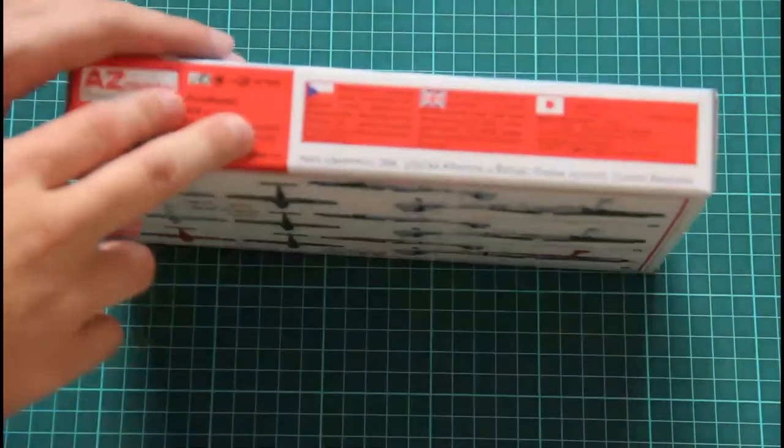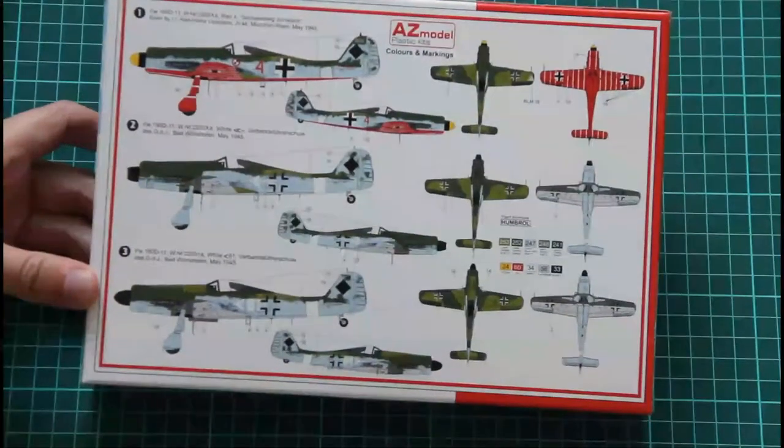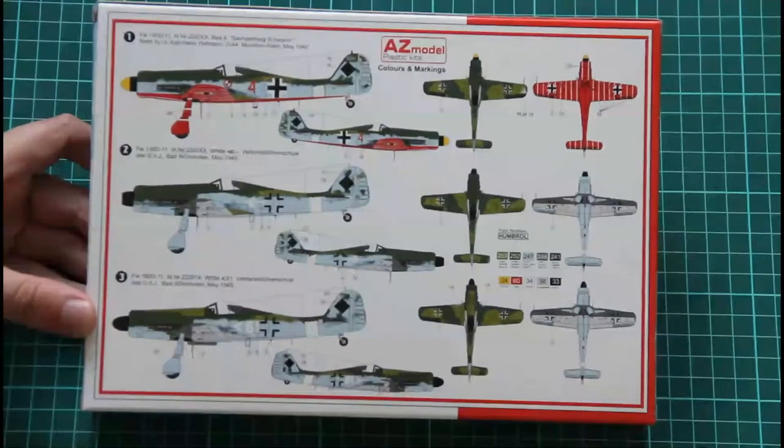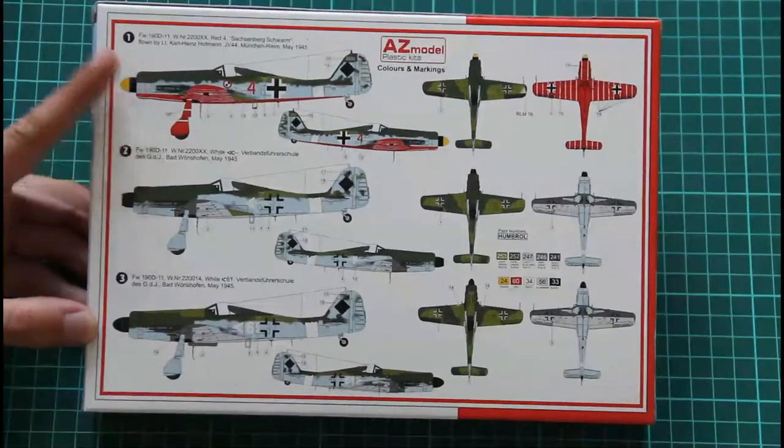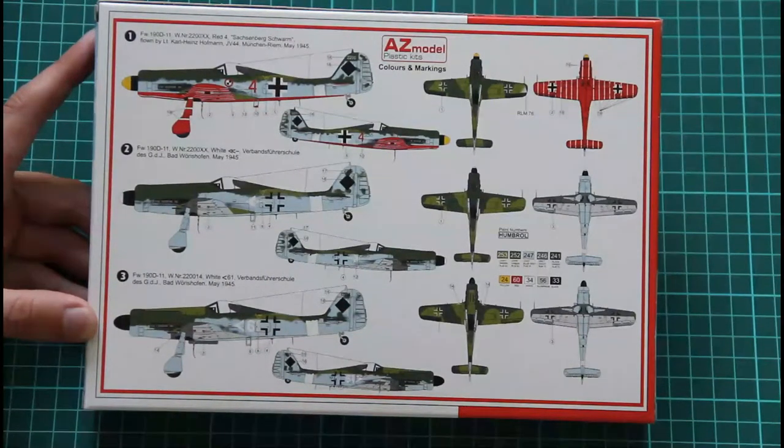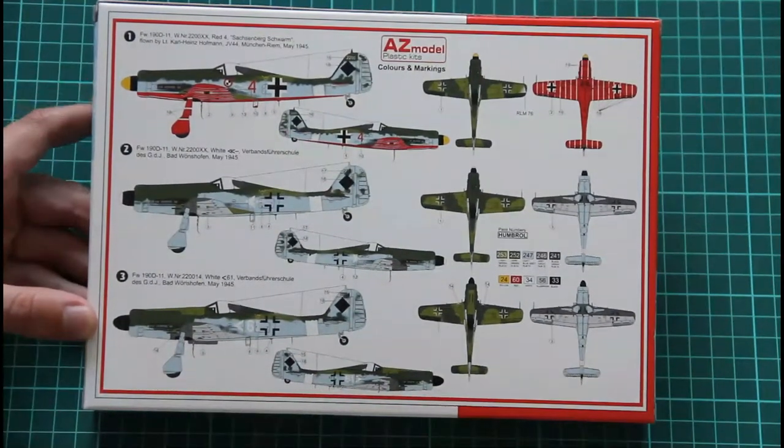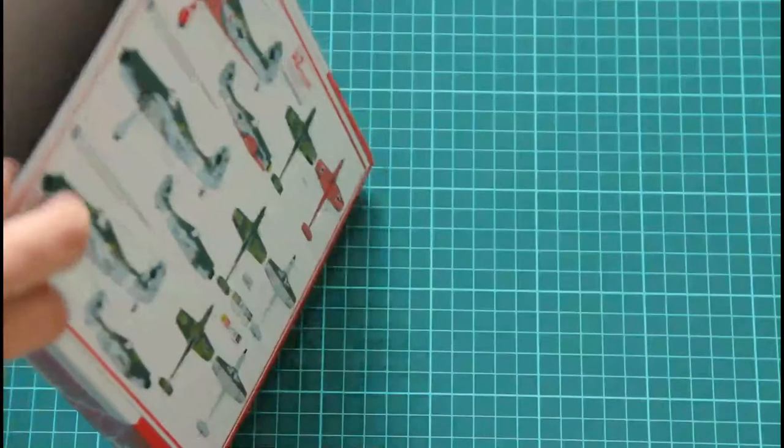On the sides we have some safety information, and here we have color markings description which are included in this kit. There are three options including this JV44, which is really nice. What's so interesting is that AZ model included decals for the JV44, so you can avoid extra actions while painting these white stripes on the fuselage.